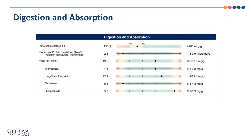The digestion and absorption markers include pancreatic elastase, which is a marker of pancreatic exocrine function; products of protein breakdown, which are formed when bacteria ferment protein; and fecal fats, which can be elevated if a person is not sufficiently digesting or absorbing their fat.